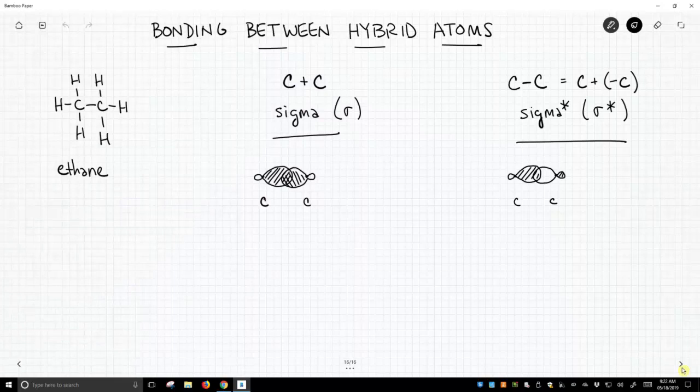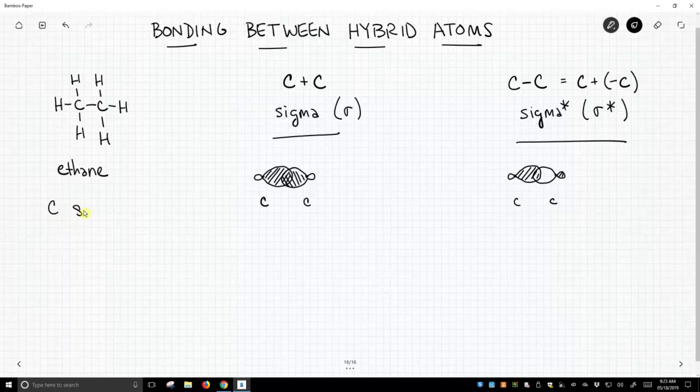So on the left, we have a molecule. This is ethane. Ethane, both these carbons are sp3 hybridized, and therefore they are connected by a bond, a sigma bond, that is made by the overlapping of sp3 hybrids. It's an sp3 hybrid from the carbon on the left to an sp3 hybrid on the carbon on the right.